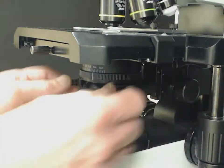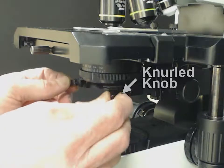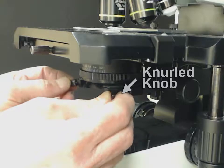Finally, if the field diaphragm blades are not centered, use the knurled knobs to center the shadow image. Here's what you'll see on the microscope.